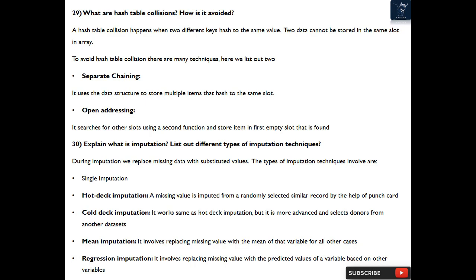Question 29: What are hash table collisions? How is it avoided? A hash table collision happens when two different keys hash to the same value. Two data cannot be stored in the same slot in array. To avoid hash table collision, there are many techniques. Here we list out two: separate chaining, it uses the data structure to store multiple items that hash to the same slot. Open addressing, it searches for other slots using a second function and stores item in first empty slot that is found.